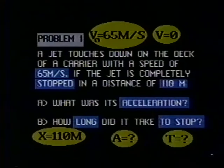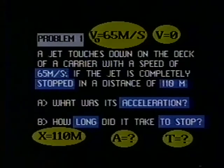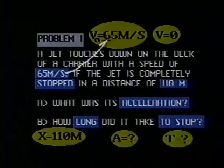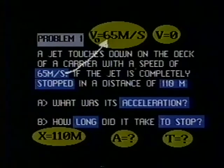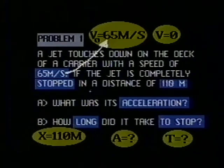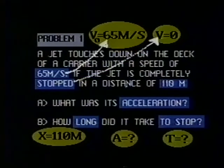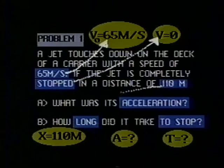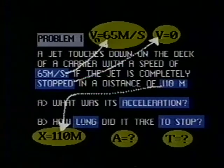Here's problem one again. We can translate the information in this problem into symbols. A jet touches down on the deck of a carrier with a speed of 65 meters per second. The 65 meters per second, we translate to read V0, the initial velocity is 65 meters per second. If the jet is completely stopped, we translate to mean when the velocity of the jet is zero. In a distance of 110 meters, that the distance traveled or its displacement from the point where it touched down is 110 meters.